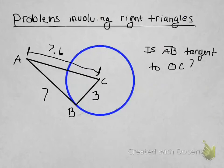If it is a right triangle, this would be our right angle, right? Well, if that's a right angle, doesn't that mean that this has to be a line that's tangent to the circle? So why don't we check and see if Pythagorean theorem works?